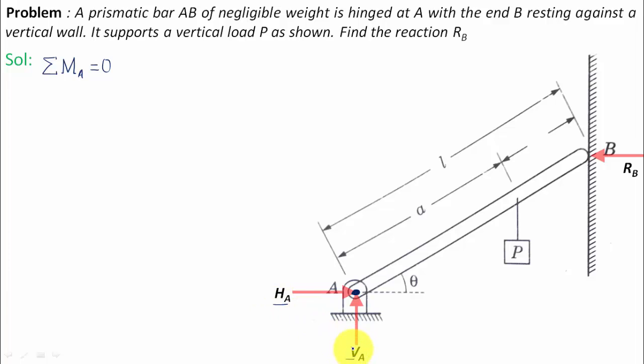The only forces which are left are P and RB. In order to take moments of these two forces, a small construction is to be done. Now, keep your right-hand thumb over here at A, try to move your baby finger along this direction. You shall realize that this RB produces an anti-clockwise moment.